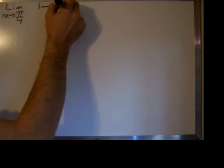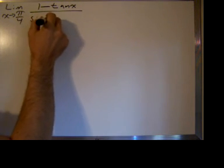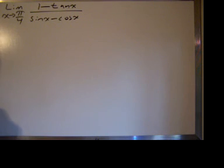Good morning. Today we're going to evaluate a limit involving trig. The limit as x approaches pi over 4, it's a double-sided limit, of 1 minus the tangent of x divided by the sine of x minus the cosine of x.